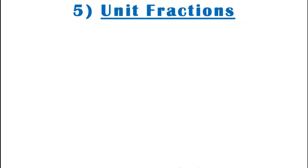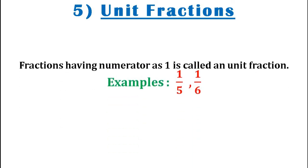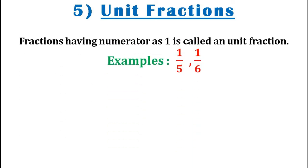The fifth type of fraction is known as unit fractions. Fractions having numerator as 1 are called unit fractions. Examples: 1 by 5 and 1 by 6.